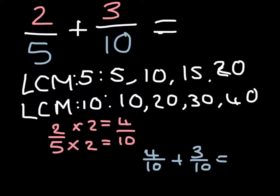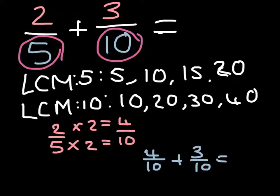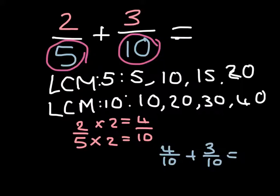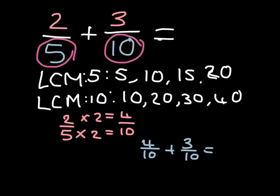When you are adding fractions with different denominators, it gets a little more difficult. But don't worry, it's not that hard. What you do is you find the LCM of the two denominators. The LCM is the lowest common multiple.